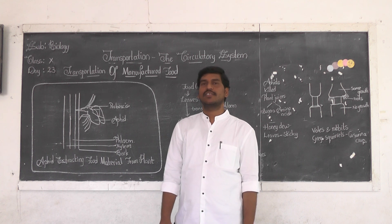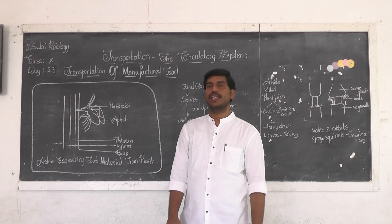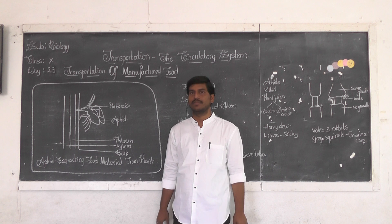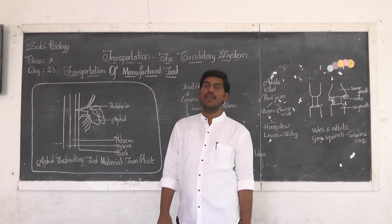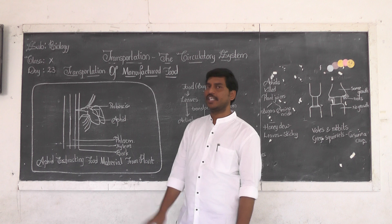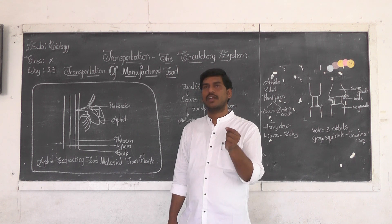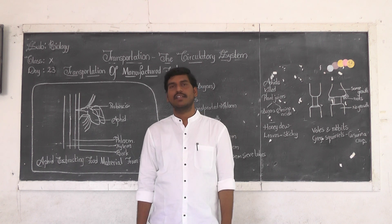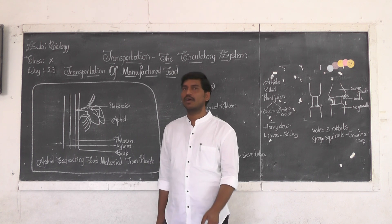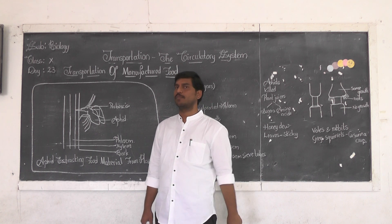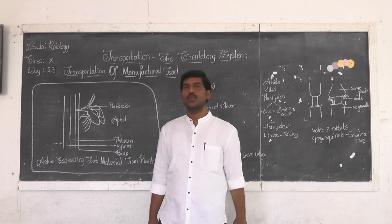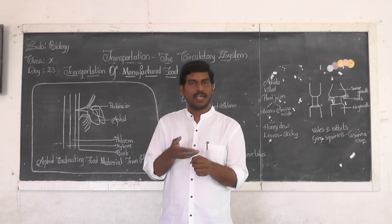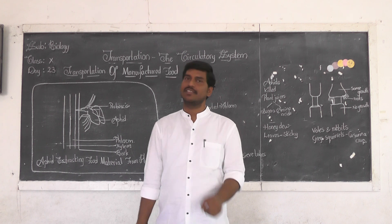To understand that phloem plays an important role in transportation of food material, let us try to understand with an aphid experiment — activities which were done by scientists studying aphids. Aphids are small green insects, tiny flies that feed on slender stems and leaves of the plant. When you take a transverse section of a stem, xylem bundles are interior and phloem is exterior. You can look at the xylem which is interior, the phloem which is exterior, and the bark.